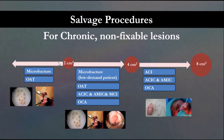The algorithm is made easier by lesion size. For a small lesion less than two centimeters, microfracture or OATS is a good option. Microfracture gives fibrocartilage; OATS gives hyaline cartilage, but cannot be used for big lesions due to donor site morbidity. For lesions two to four square centimeters, microfracture works in low-demand patients, but in high-demand patients we do not recommend it as it deteriorates over time. For big lesions, we recommend OATS implantation, OATS transfer, AMIC, or ASIC.